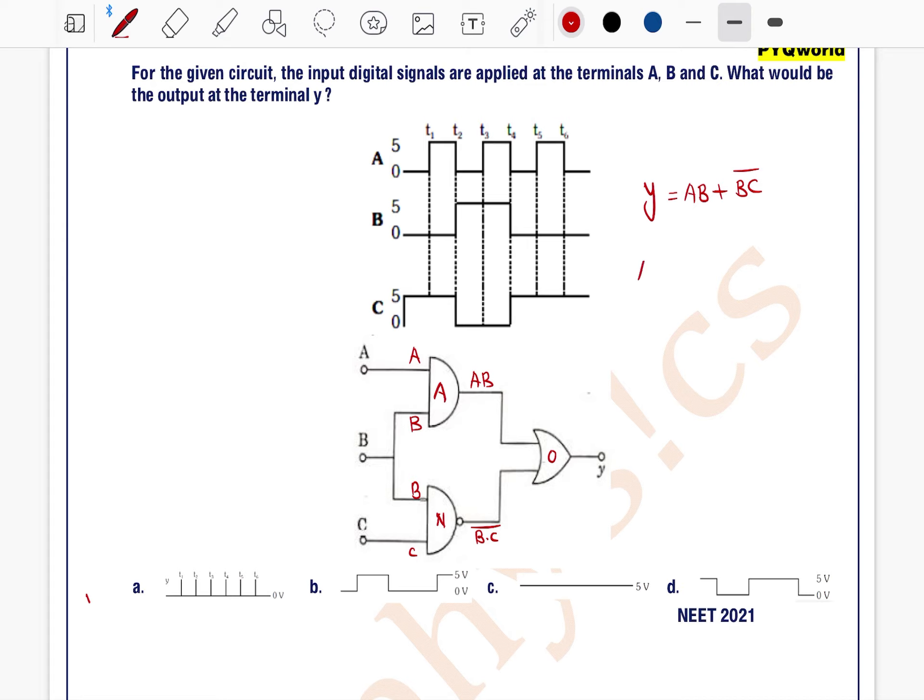Now make a truth table of this. So for that purpose A, B. I will make a truth table here only. This is A, this is B and this is C and output Y is there.